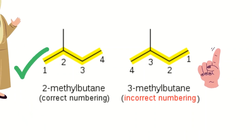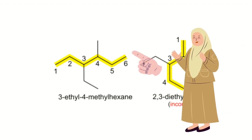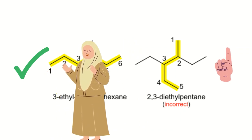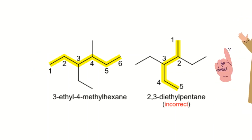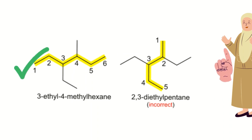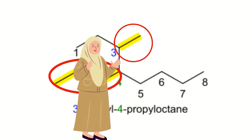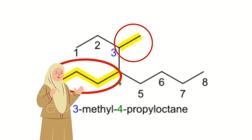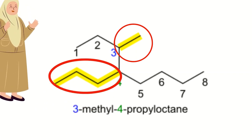Remember to number the chain consecutively starting at the end nearest a substituent group. In another compound, the longest chain has six carbons — hexane — with one methyl group at carbon number four and one ethyl group at carbon number three. Another example is octane with one methyl group at carbon number three and one propyl group at carbon number four.